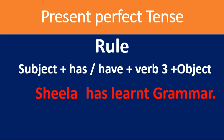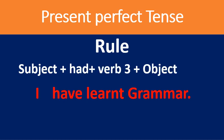For example: 'Sheila has learned grammar.' Here 'Sheila' is singular, so we use 'has,' followed by the third form of the verb 'learned,' and the object 'grammar.' The rule is: subject + has/have + verb in the third form + object. 'I have learned grammar.' 'Sheila has learned grammar.'